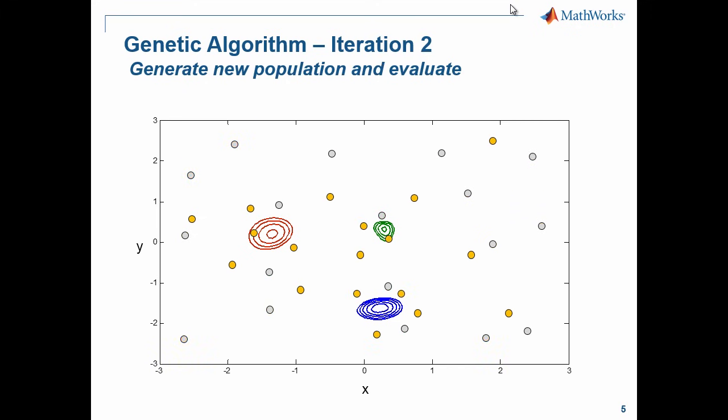For iteration two, we generate those new points through selection, crossover, and mutation, and then we evaluate the new population. We then repeat this process of generating new generations until the algorithm converges.